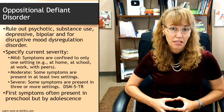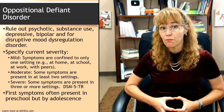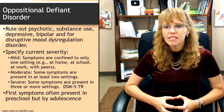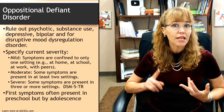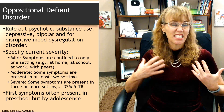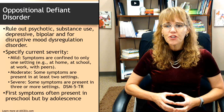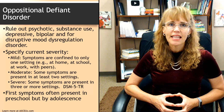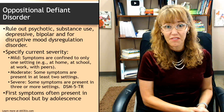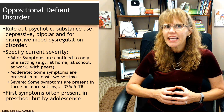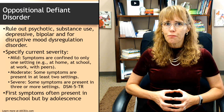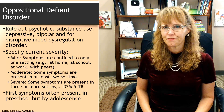Moderate severity means some symptoms are present in at least two settings, indicating more difficulty with emotional dysregulation across multiple settings and with multiple people. Severe means some symptoms are present in three or more settings — at home, at school, and with peers, for example. The first symptoms of ODD often present in preschool and definitely by adolescence, and it's important to examine the child's behavior from a developmental standpoint.